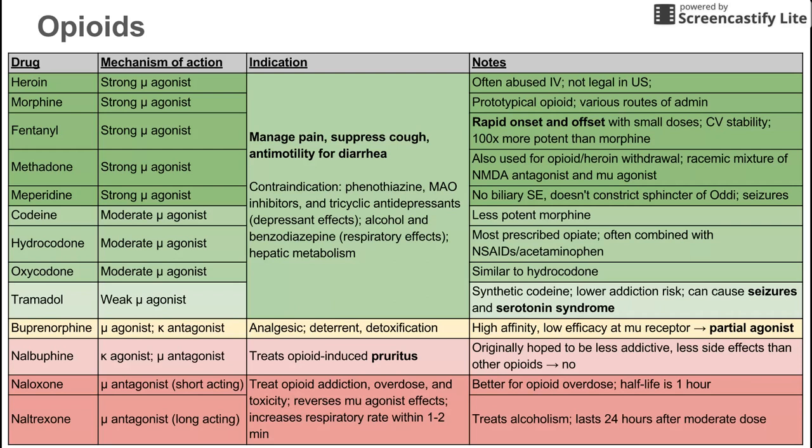Heroin specifically is a very strong mu agonist, and it's often abused intravenously. Therefore, it's not legal in the United States.